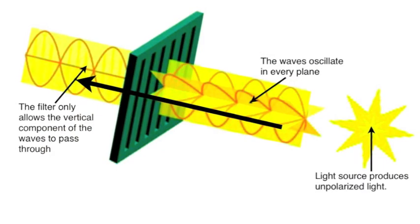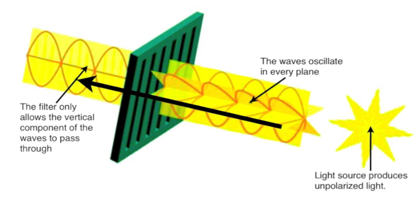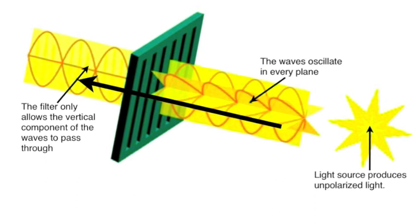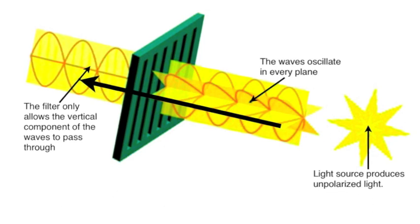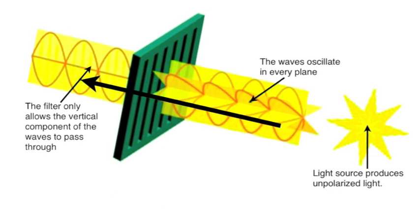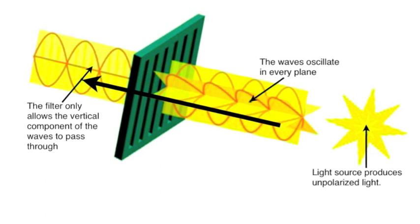It works something like this. The white light from outside is oscillating in every plane. The filter only allows one component of the wave to pass through. In this case, in this picture, it is the vertical component.